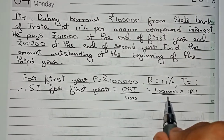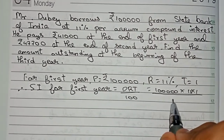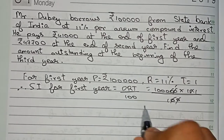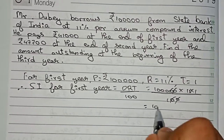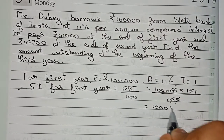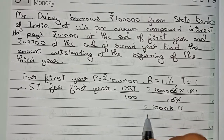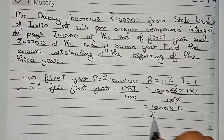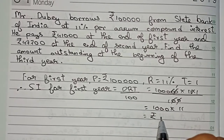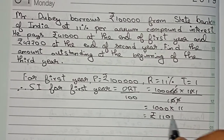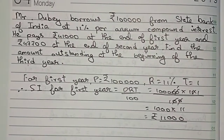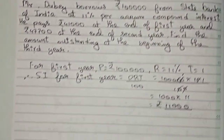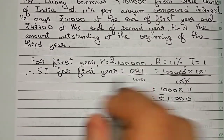That means 1 lakh into 11 into 1, divided by 100. Cutting the zeros, it remains 1000 into 11, which equals rupees 11,000. Therefore, this is the interest for the first year.